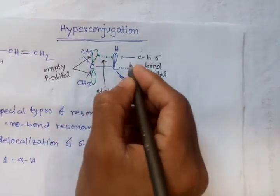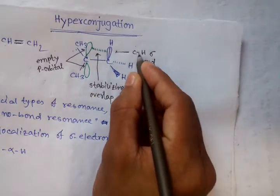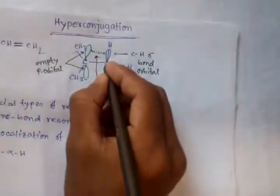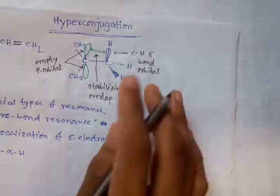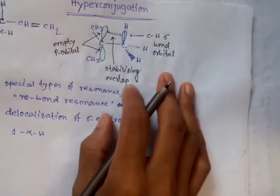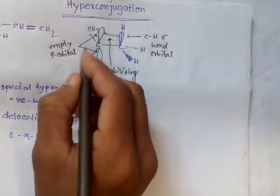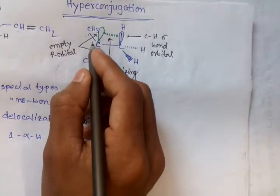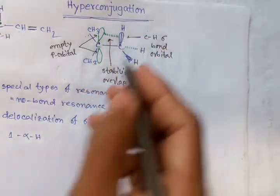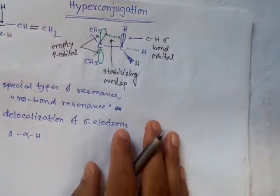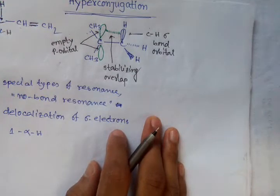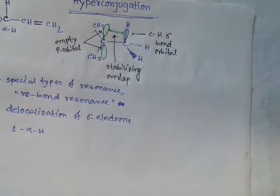So this C–H sigma bond orbital can undergo hyperconjugation, because this is an empty p orbital or unshared orbital. So they can undergo hyperconjugation — hyperconjugation is possible.